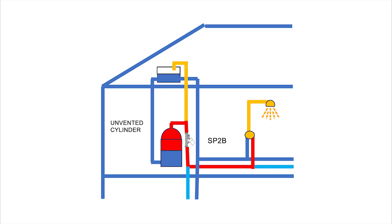If your cold pressure is also low, you need an SP22S to single boost the hot and single boost the cold. For gravity hot and mains pressure cold, the better solution is to double boost the hot only with an SP21S.